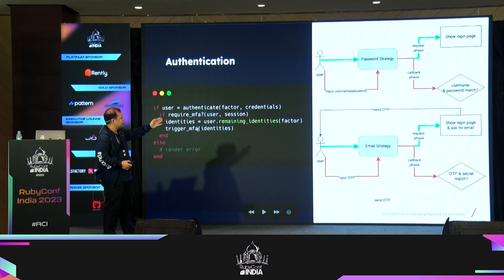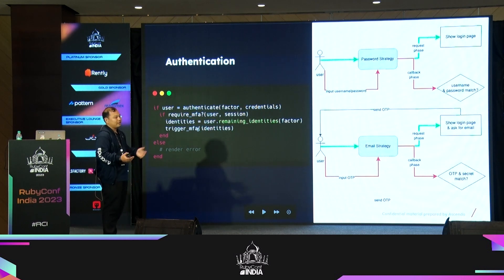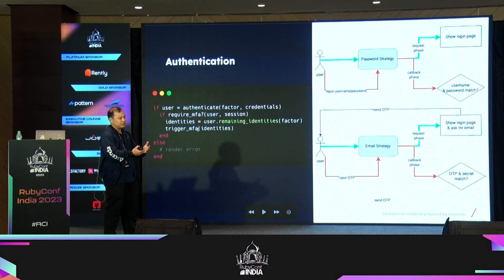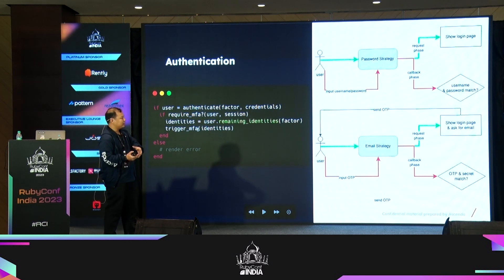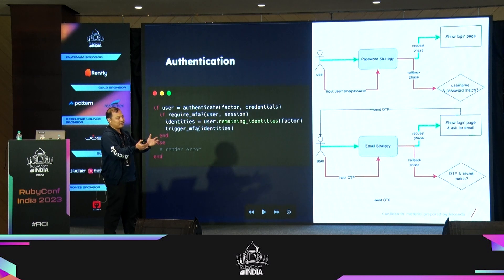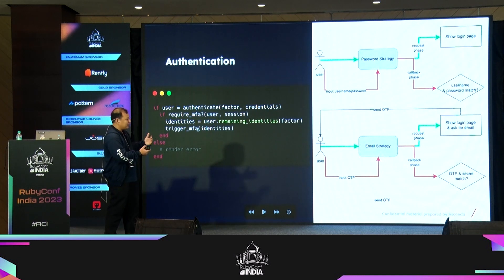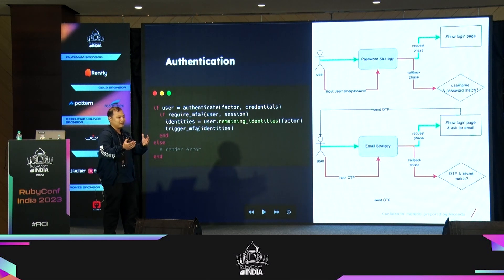You can split the authentication part into two phases. First is the request phase: the user comes in, chooses a method like password, and we display the username/password form. Only after they submit does it become the callback phase, where we check whether the username and password match. It's the same for a different strategy like email or phone — we show a prompt asking for the email or phone number, send an OTP to the user, and only in the callback phase when the user submits the OTP do we check whether it matches the secret stored in the identity.